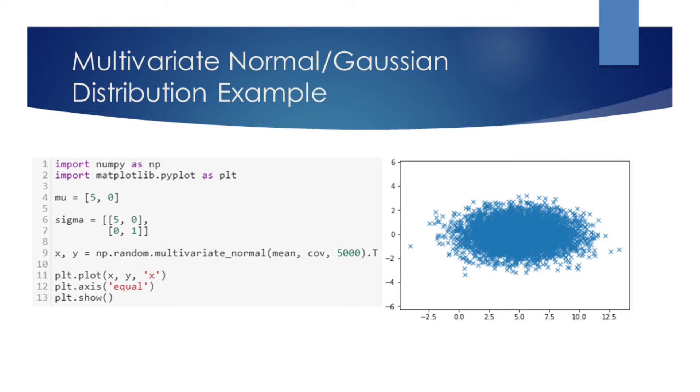On the sixth and seventh lines, we declare the covariance matrix sigma. We know that the diagonal entries of the covariance matrix specify the variance.